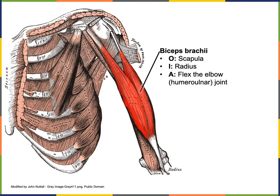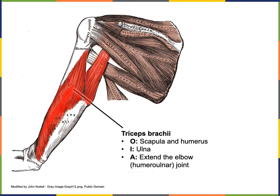Biceps brachii has its origin from the scapula and inserts on the radius, enabling the action of flexion of the elbow, also known as the humeral ulnar joint. The triceps brachii, located on the posterior brachial region, has an origin from the scapula as well as the humerus, inserts on the ulna, and performs the action of extension at the elbow joint.